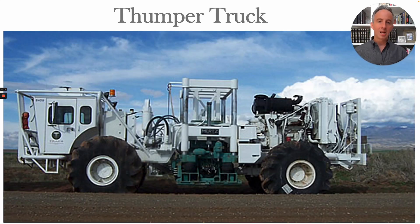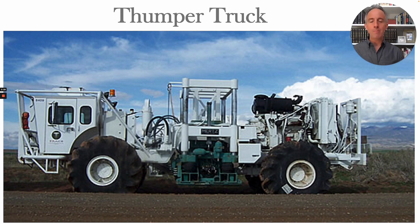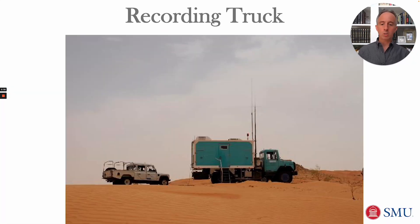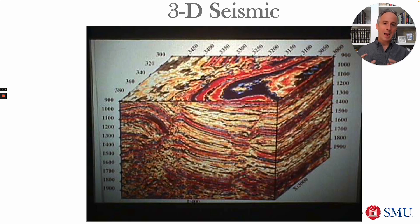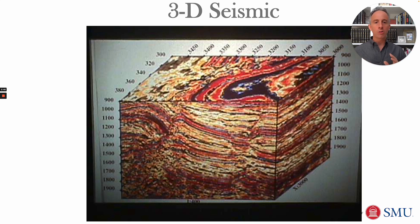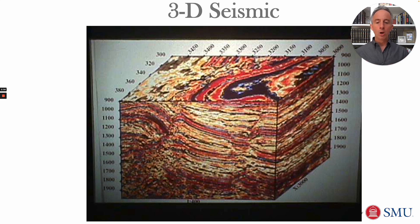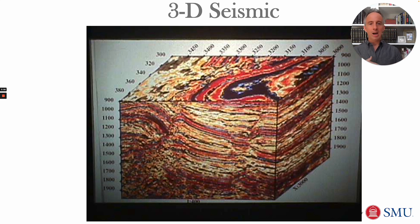Here's one of those thumper trucks that generates the sound waves reflected back to listening stations, and here's a recording truck with a whole string of sensors behind it picking up those seismic waves. A 3D seismic picture is assembled from all those readings to make inferences about the rock layers beneath the earth — how they might be angled or folded, and where there might be a trap for oil and gas.